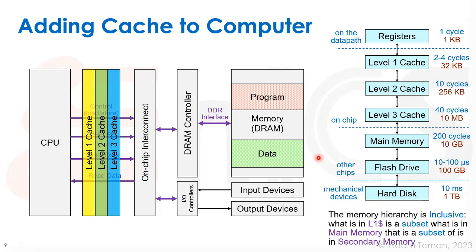One important thing: the memory hierarchy is inclusive. Whatever is in the L1 cache is a subset of what's in main memory, and main memory is a subset of what's on disk. We copy things as we move them up the hierarchy — we don't erase them from the lower level. We will see that things can get dirty if we write to them and haven't written back yet, but in general we make copies as we move data up, we don't move and erase the source.